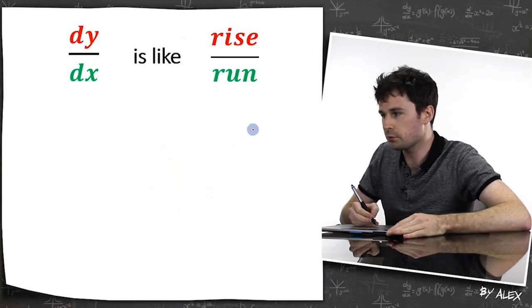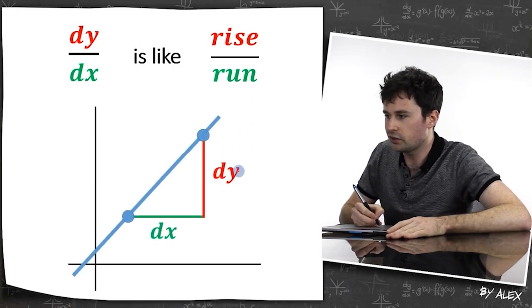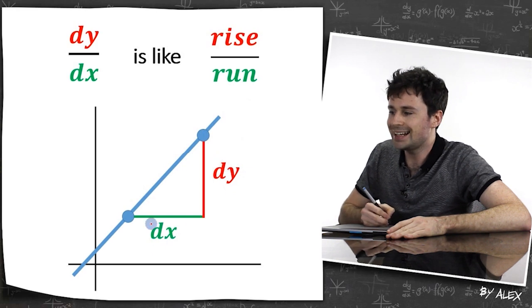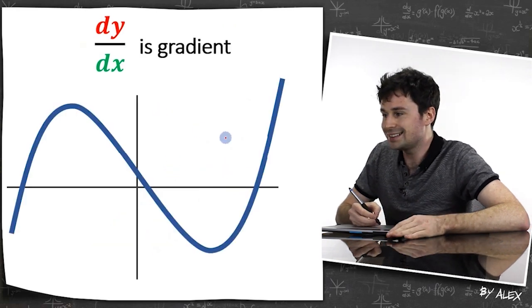dy/dx is a little bit like rise over run. So if you look at it, the dy is the rise and the dx is the run. dy/dx is essentially the gradient.